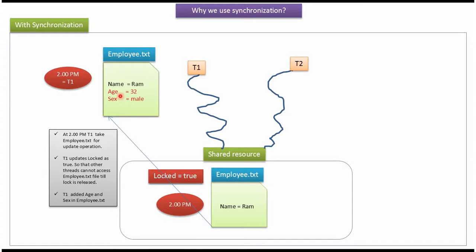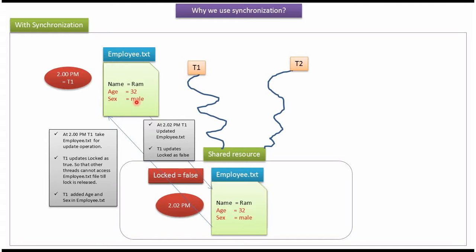Then thread1 added age equal to 32 and sex equal to male. At 2.02 pm, thread1 updated the employee.txt file. Now employee.txt file contains name equal to rom, age equal to 32, and sex equal to male. Thread1 also released the lock — it updated locked equal to false. Once the lock is released, other threads can access the employee.txt file.